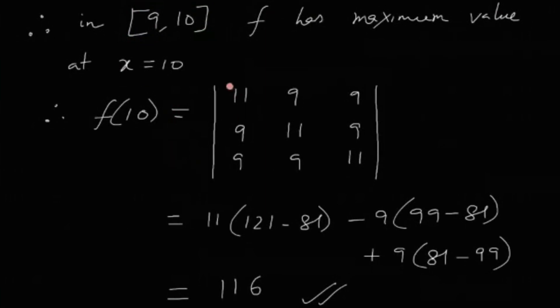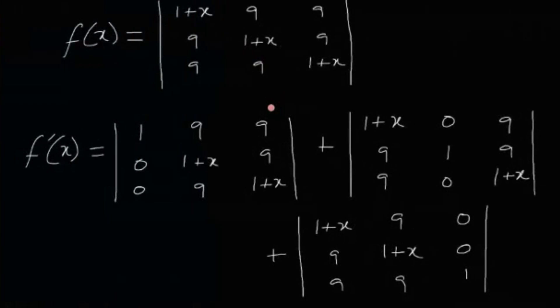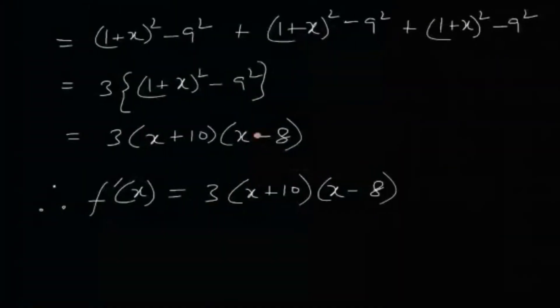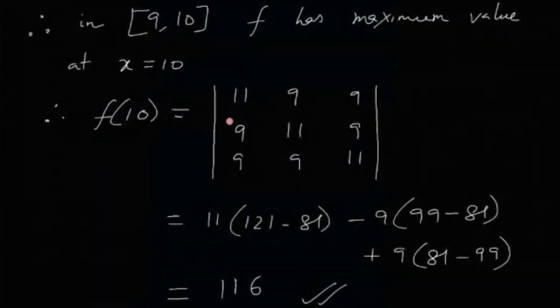So f(10) is the determinant of the matrix with all entries equal to 11 on the diagonal and 9 elsewhere, which evaluates to 116. The answer to this problem is 116. Directly expanding the determinant at the start would also work but leads to messier calculations; differentiating the determinant column by column is a much cleaner approach.